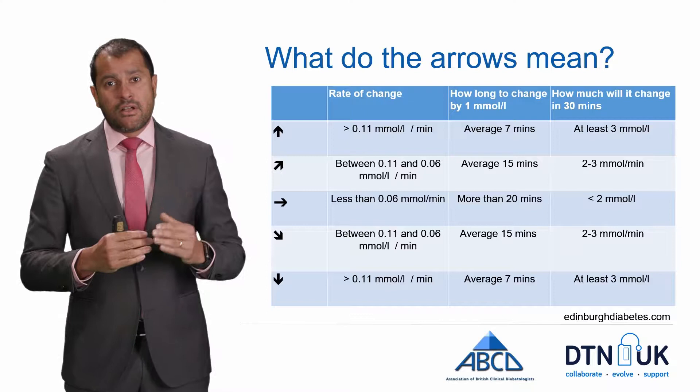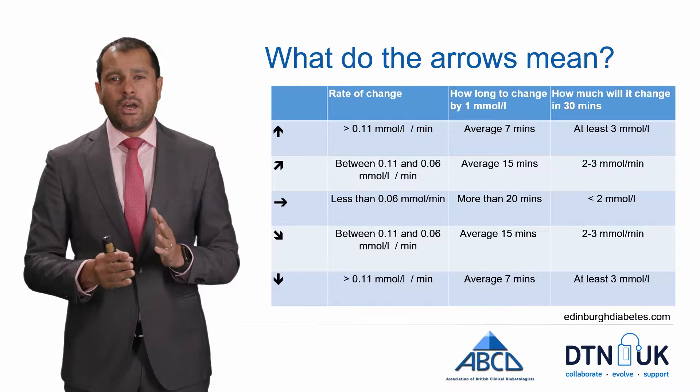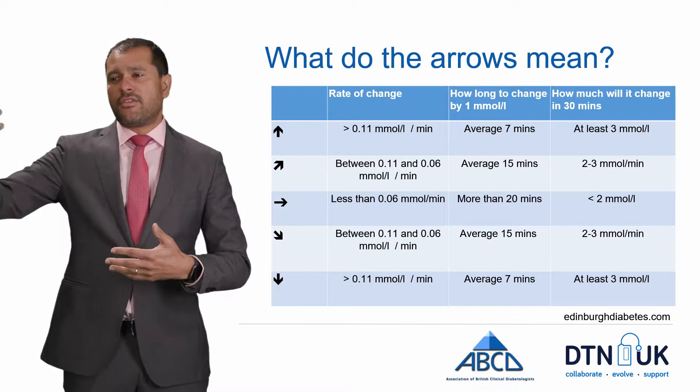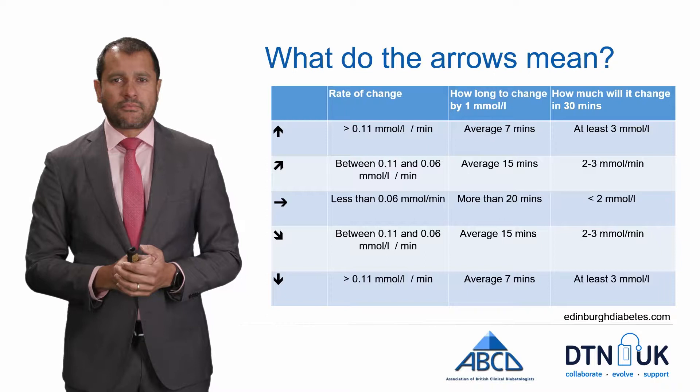If you've got the oblique arrow, the glucose is changing by between 0.06 and 0.11 mmol per litre per minute, so it's going to take on average about 15 minutes to change by one mmol. In about 30 minutes you're going to be about two or three mmol higher than where you are now.